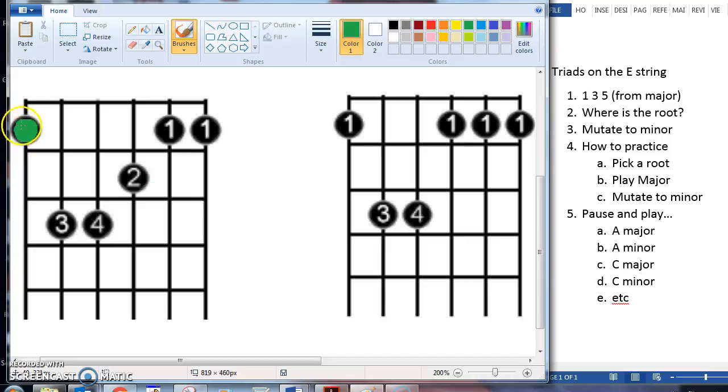And then you have another root right here. This is the octave. There's actually another root there. So this is a G. All those green dots would be G.